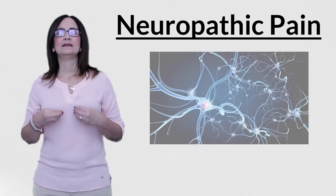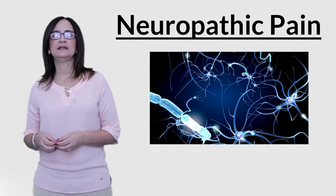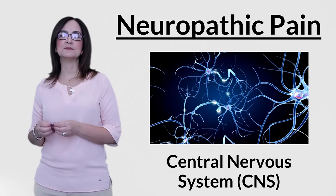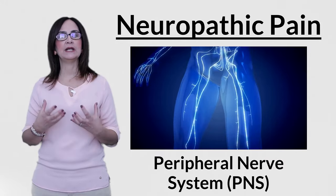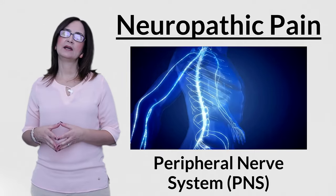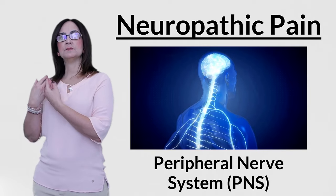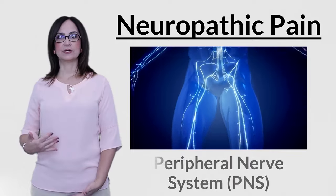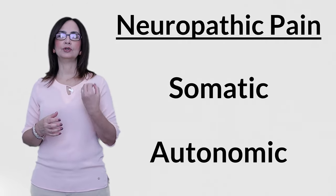Let's start with neuropathic pain. Neuropathic pain occurs when there is damage or dysfunction of the nervous system itself. This could be in the peripheral nerve system, PNS, or in the central nerve system, CNS. The peripheral nerve system consists of the nerves that exit from the brain and the spinal cord. They carry information from the periphery to the spinal cord and brain, and transmit orders from the brain to muscles and organs. The peripheral nerve system is subdivided into the somatic and the autonomic nerve systems.